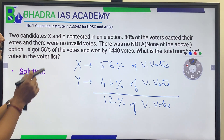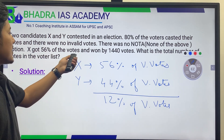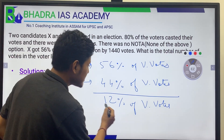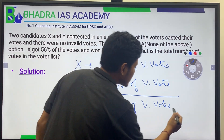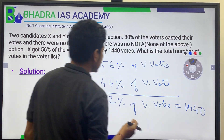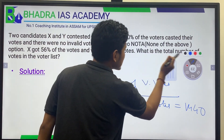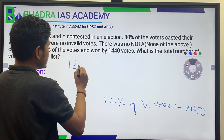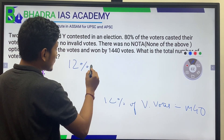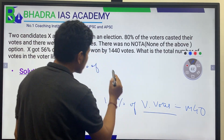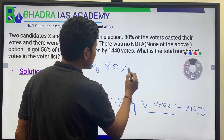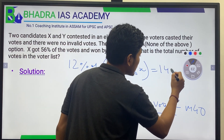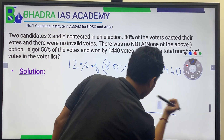X is winning by 1440 votes, so 12% of the valid votes equals 1440. Since valid votes equals 80% of X, we set up the equation: 12% of 80% of X equals 1440.